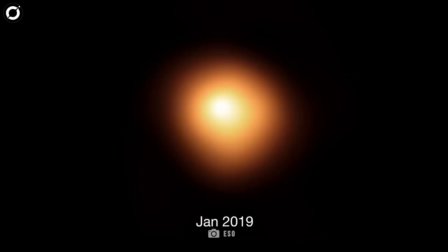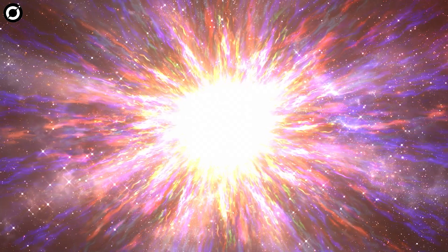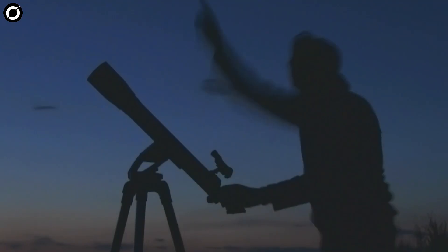Now, here's where it gets interesting. In late 2019, Betelgeuse started to mysteriously dim, puzzling scientists. Was this the sign of a supernova? Or was something else happening? It sparked a frenzy among astronomers, who rushed to study this strange behavior.